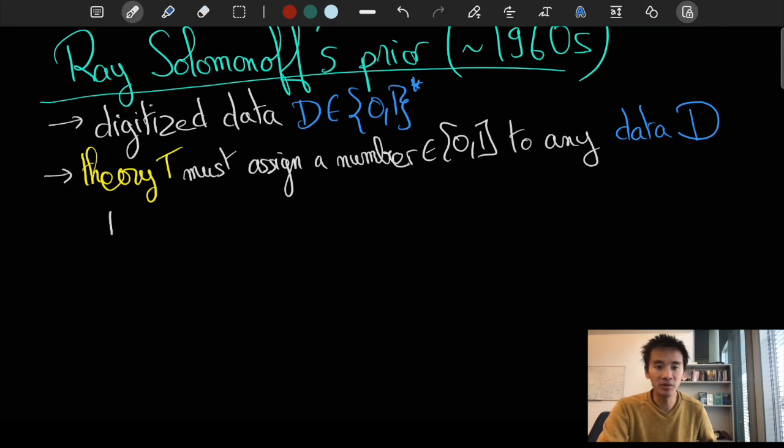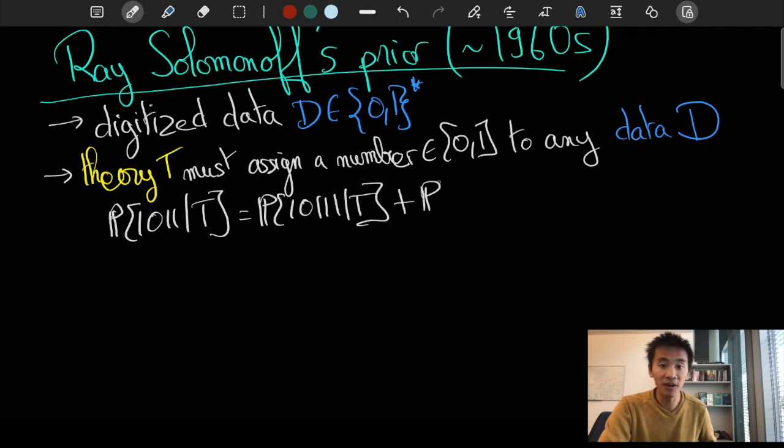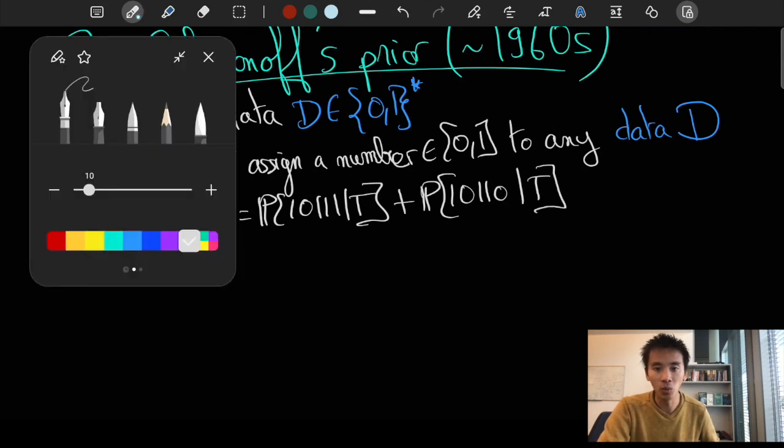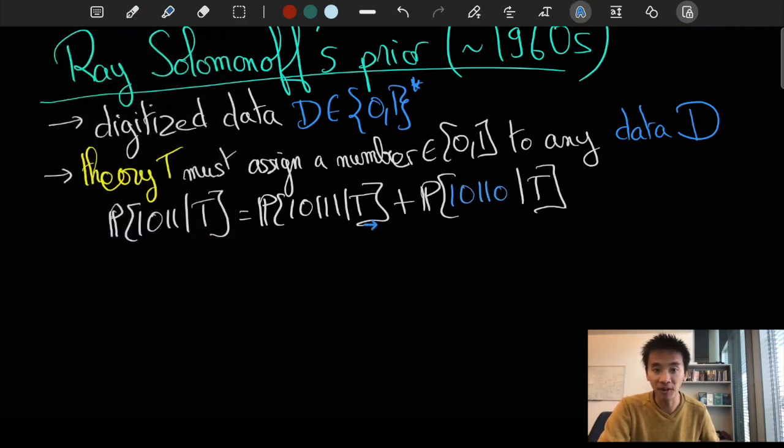Typically, the probability of observing 1011 as the first 4 bits must be the probability of observing 10110 as the first 5 bits plus the probability of observing 10111 as the first 5 bits.